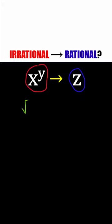If you take two irrational numbers and raise one to the power of another, you can create a rational number. To prove it, let's take the square root of two. If we raise the square root of two to itself, the result is an irrational number.